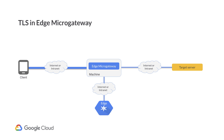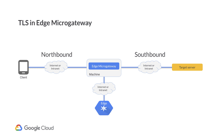However, the incoming connection between the client application and Edge Micro Gateway, which is also known as northbound, and the outgoing connection between Edge Micro Gateway and the target server, which is also known as southbound, are non-secure by default. We need to follow certain steps to enable one-way or two-way TLS for each of these connections.